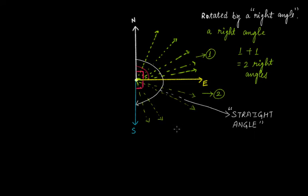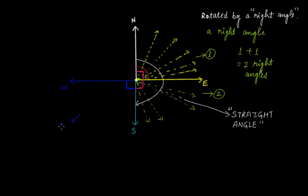Now let's suppose someone asks you to move from the south to the west. This is west. If the first was one right angle and the second was the second right angle, then this one will be the third right angle — moving from north to east, east to south, then south to west. So this is the third right angle.